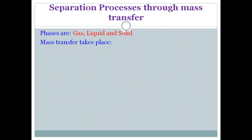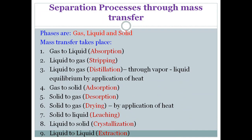There are generally three phases — gas, liquid, and solid — giving nine possible phase combinations and accordingly different mass transfer separation processes. Gas to liquid is absorption; liquid to gas is stripping. We will study absorption and stripping together in a single chapter.